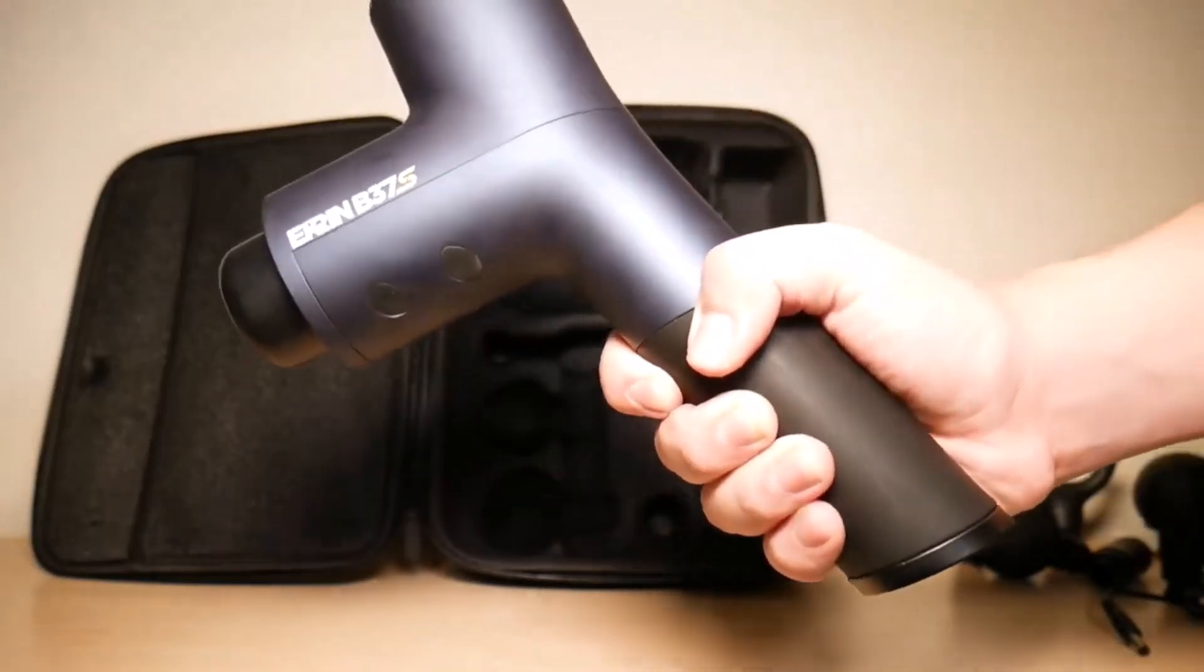Number 3. Ekrin Athletics Bantam. Mini massage guns are popular for their portability, and the Ekrin Athletics Bantam is a top choice for travel. It's sleek, lightweight, and compact, about the size of an iPhone, and comfortable to hold. With a 6-hour battery life, it's impressive for a mini massager. The Bantam includes a travel case and 4 head attachments, surpassing the Theragun Mini's 3 attachments.